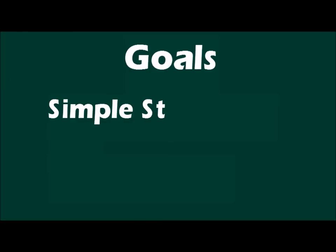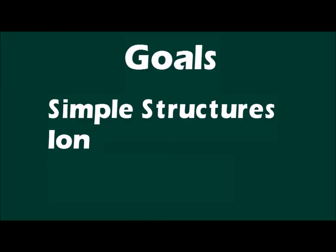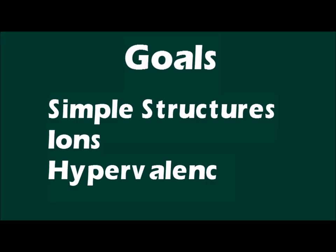We have now covered how to draw simple Lewis structures. You should now be able to calculate the total number of valence electrons in a molecule, draw basic structures, and be able to use hypervalence where appropriate.